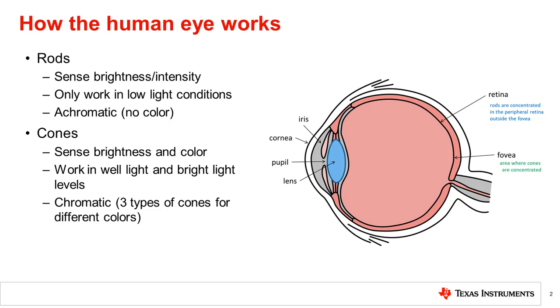The human eye focuses light through a lens onto the fovea, which is at the center of the retina. The human eye contains two different types of photoreceptors called rods and cones. Rods are spread around the outside of the retina.